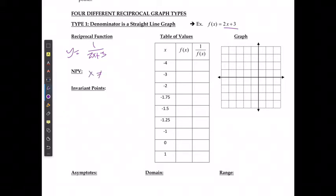The non-permissible values, well I can't have 0 in the denominator, which means that x cannot equal negative 3 over 2. If I'm looking for what the invariant points are, I can solve that on my table of values or I can solve that algebraically. So if I want to solve that algebraically, what I'm looking for is from my original graph when y was equal to 1 or y was equal to negative 1.